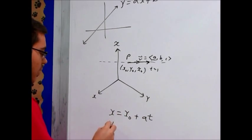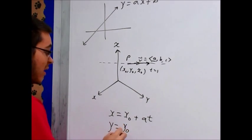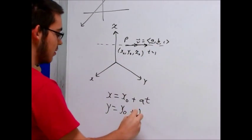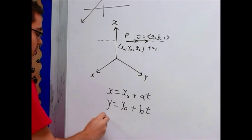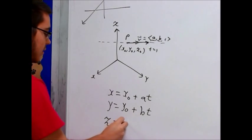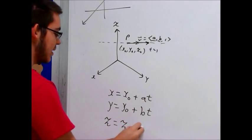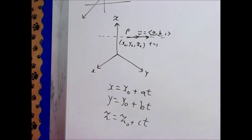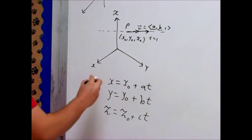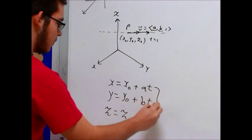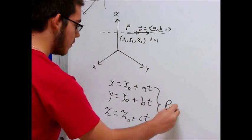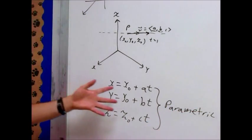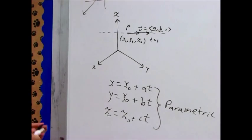In the x direction, the same thing for the y direction. It starts at y0 plus bt, in this case, is how fast it's going in that direction. And z and z0 plus ct. And so this is the general parametric form of a line in a three dimensional space.